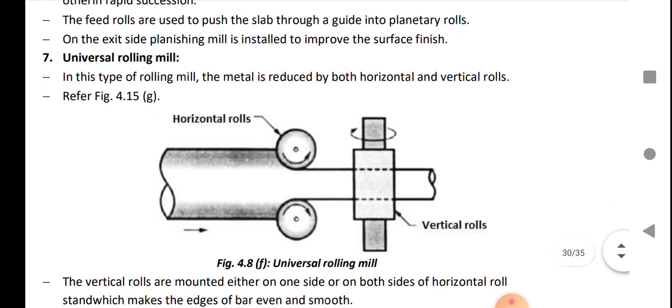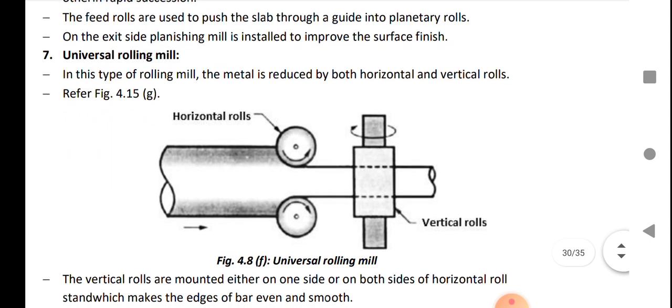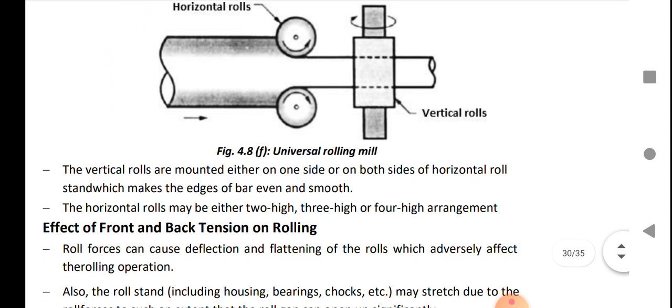Universal rolling mill: In this type of rolling mill, metal is reduced by both horizontal and vertical rolls. The vertical rolls are mounted either on one side or both sides of the horizontal rolls, which makes the edge of the bar even smoother.